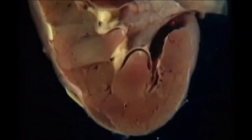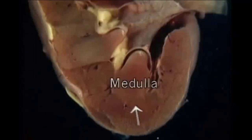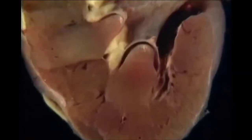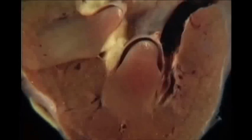The solid tissue of the kidney is called the renal parenchyma. It consists of an outer cortex and an inner medulla. The medulla is continuous with the papillae. Towards the tip of each papilla, the collecting tubules, which are just visible, converge and open into the calyces at the tips of the papillae.